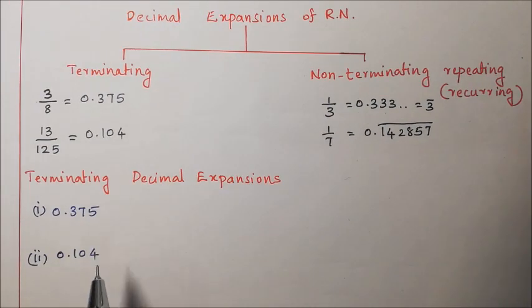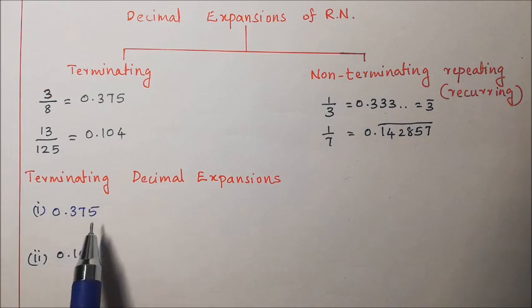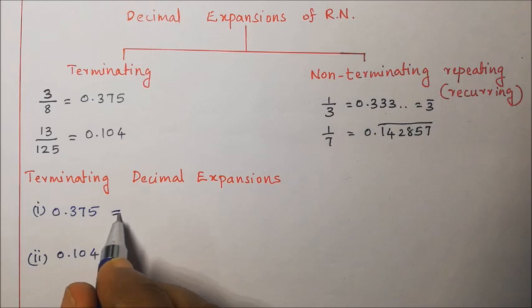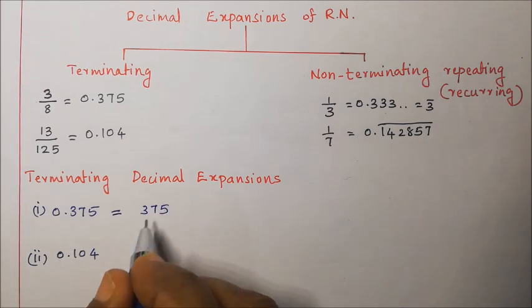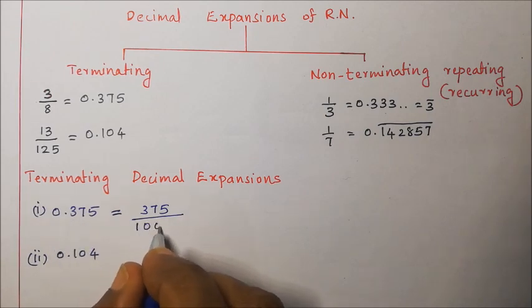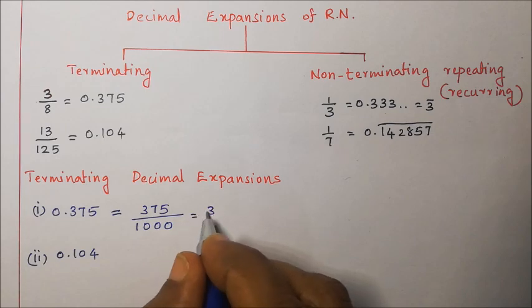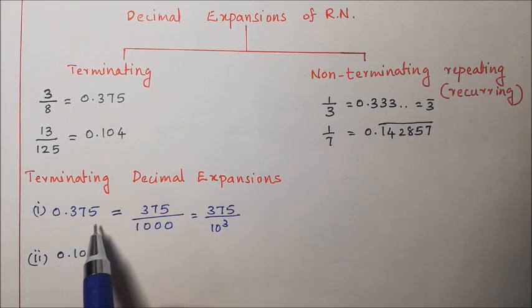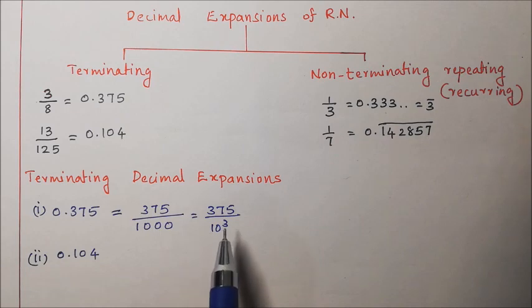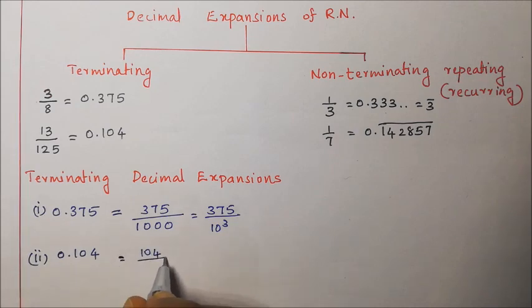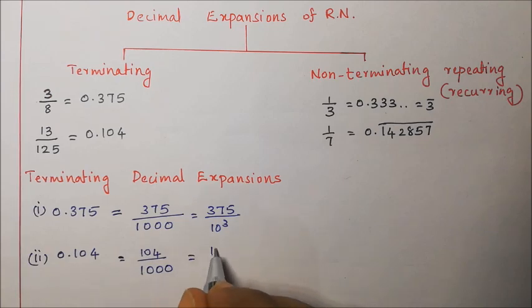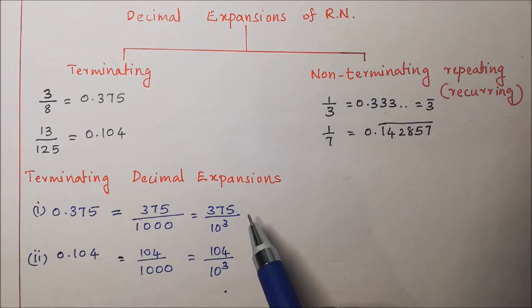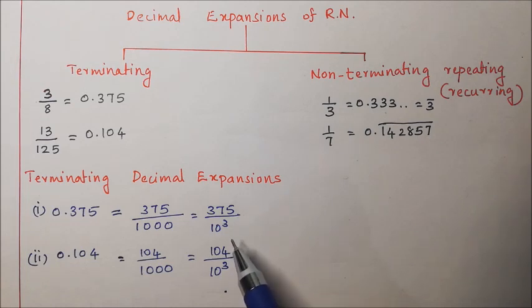Let us consider two terminating decimal expansions. First, 0.375 can be written as 375 divided by 1000, or 375 divided by 10 to the power 3. Similarly, 0.104 equals 104 divided by 1000, which is 104 divided by 10 to the power 3. We can express any terminating decimal expansion as a rational number whose denominator is a power of 10. Now, there could be common factors between numerator and denominator, so let us factorize and cancel them.